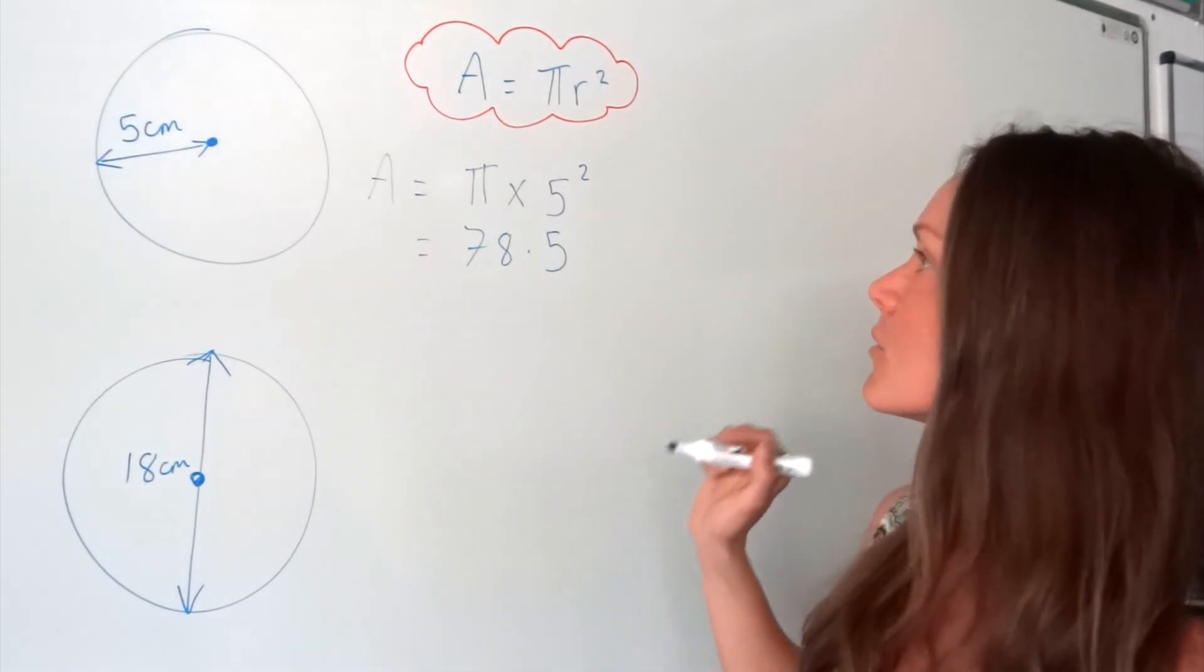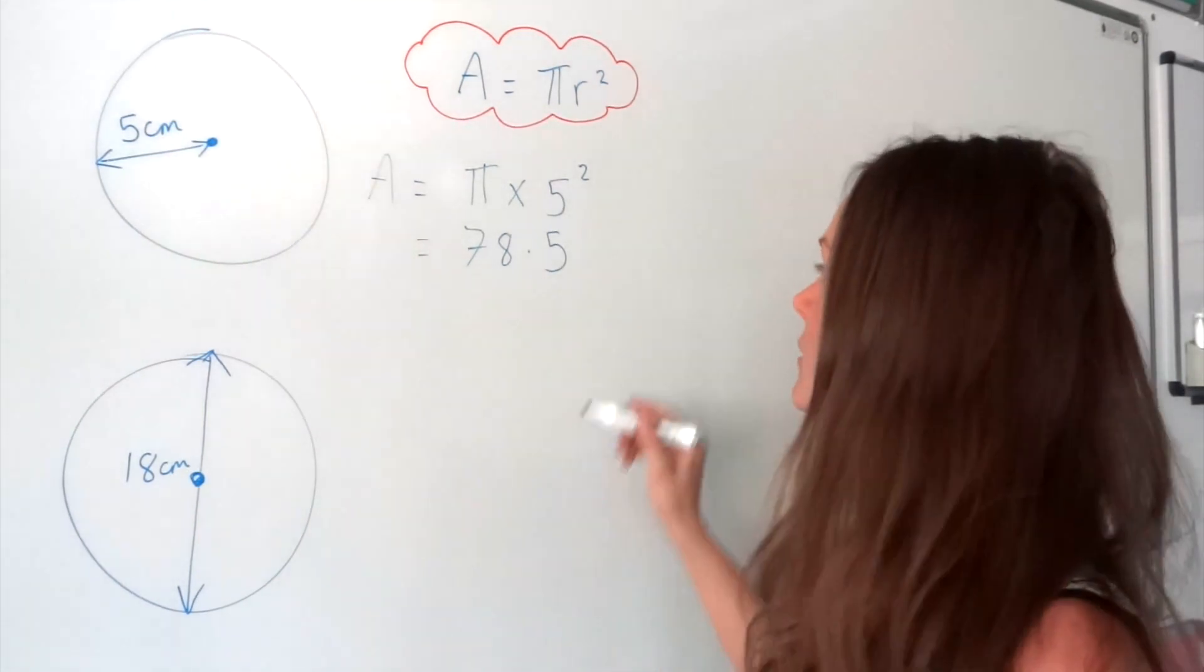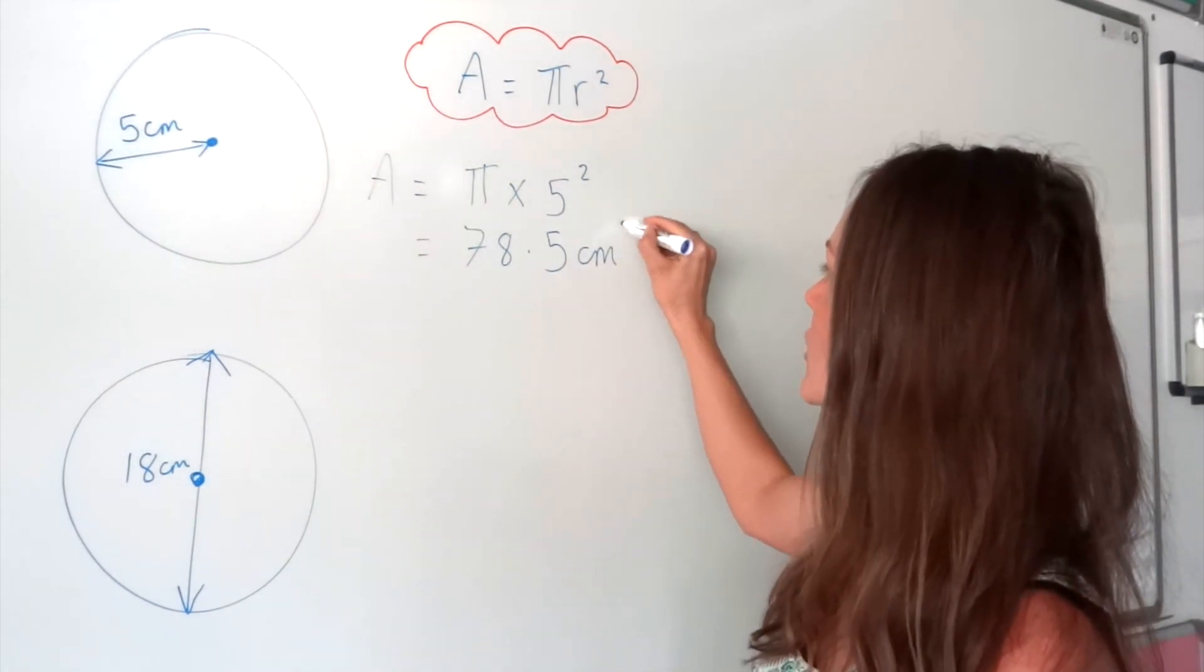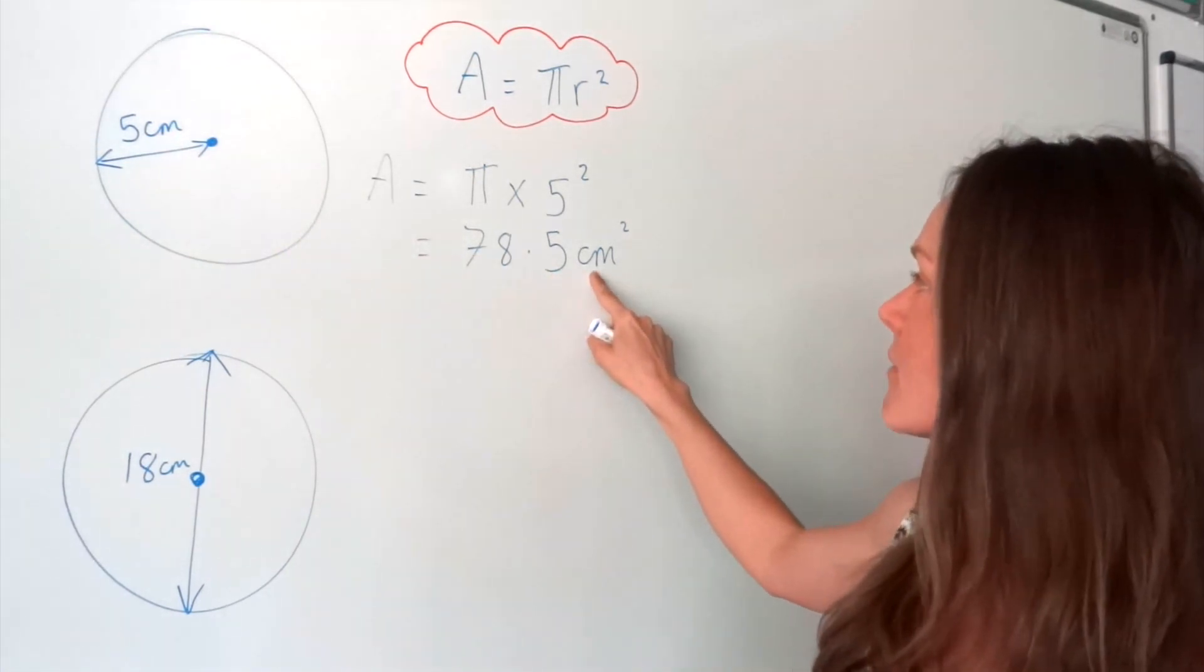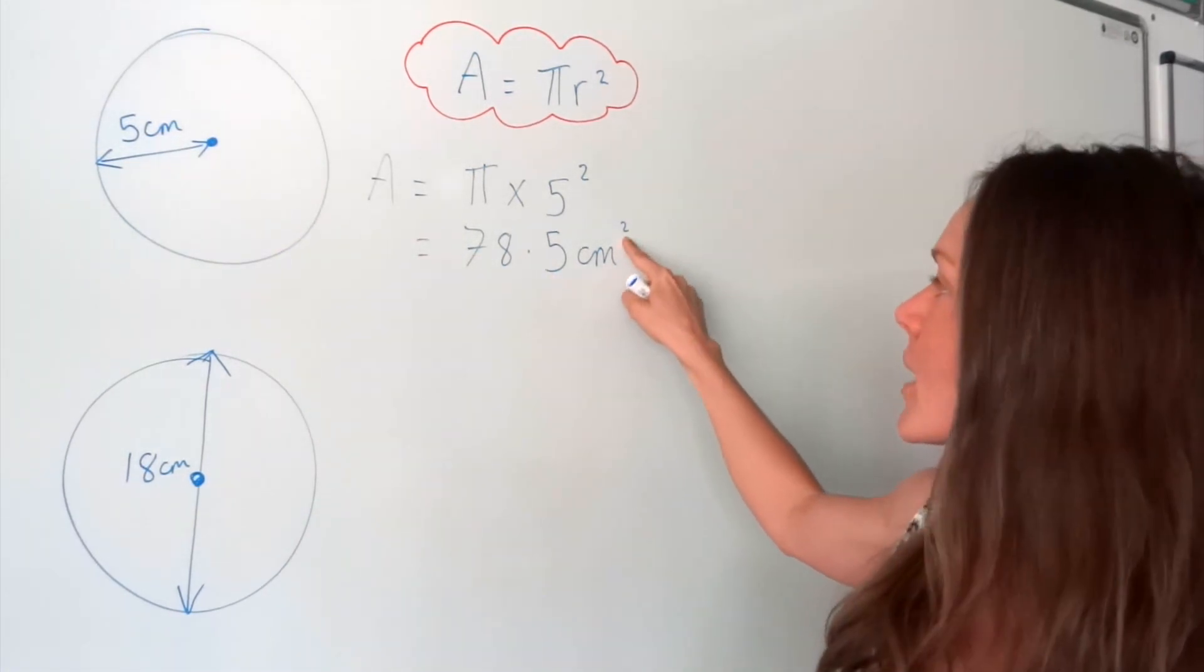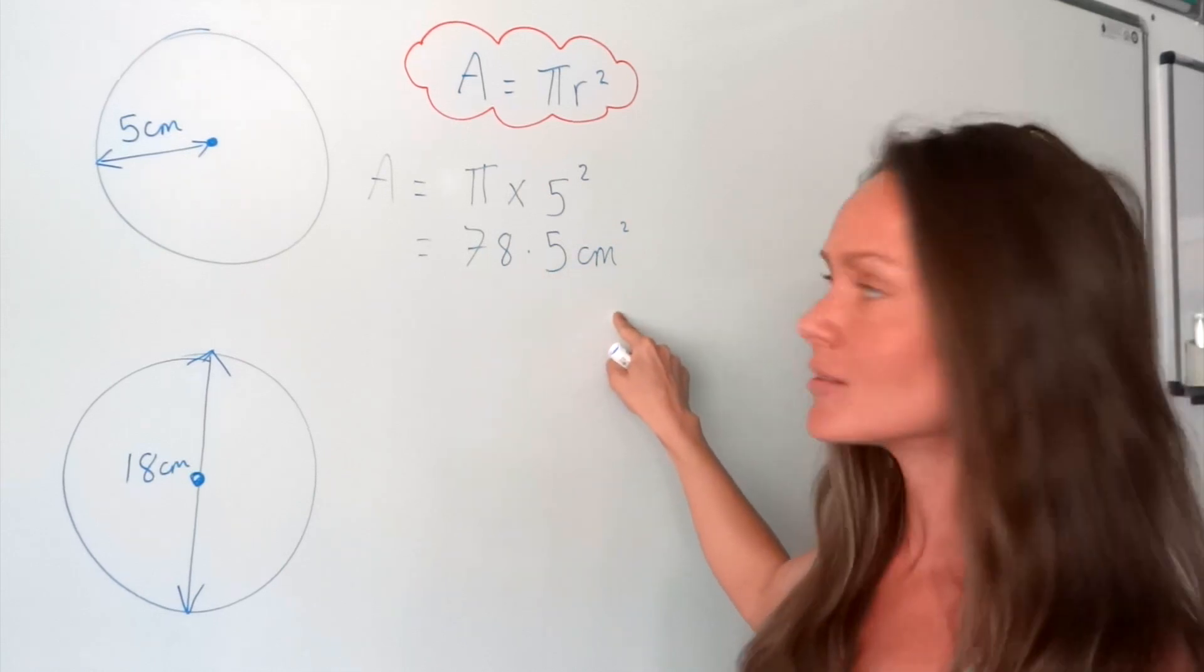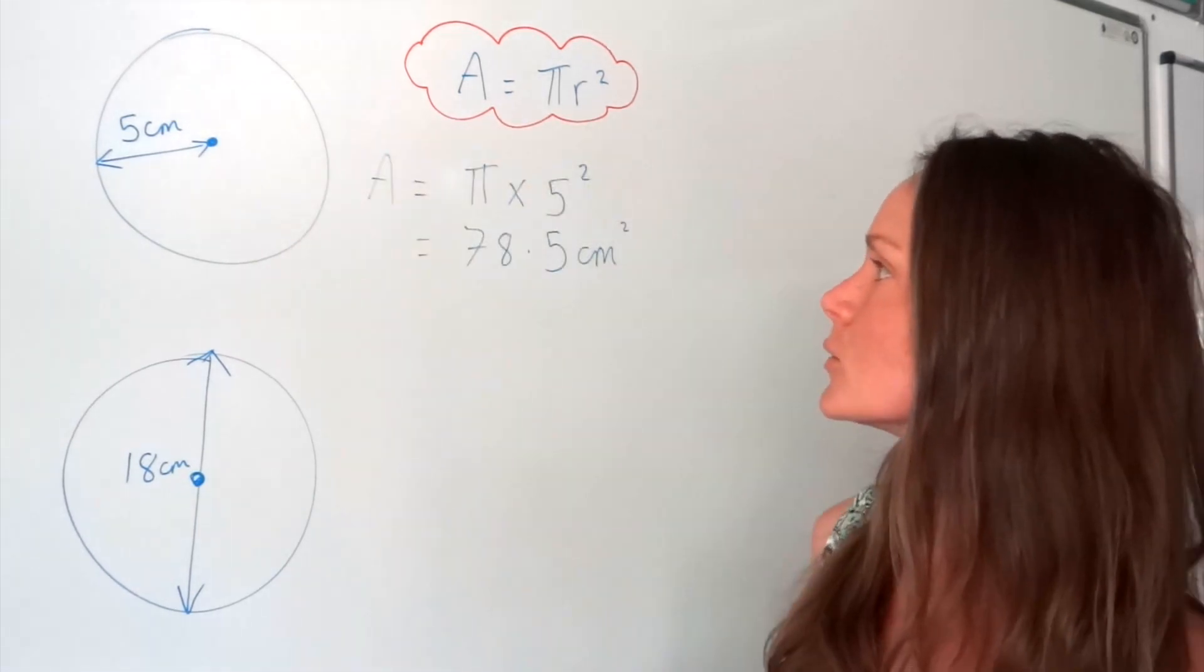So remember, the units for area are always squared. So because this was in centimetres, my units for the area are centimetres squared. And that's the final answer. So that's the area of circle number 1.